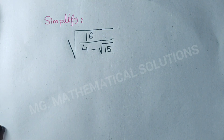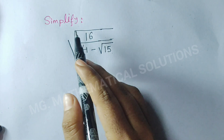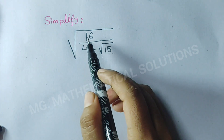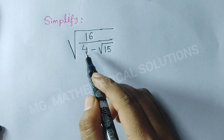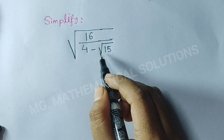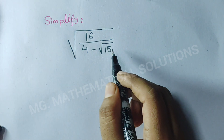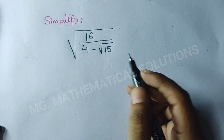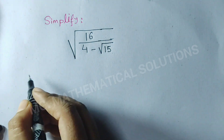Hello students. Today I solve a nice problem: simplify the square root of 16 divided by (4 minus root of 15). Let's see the solution.